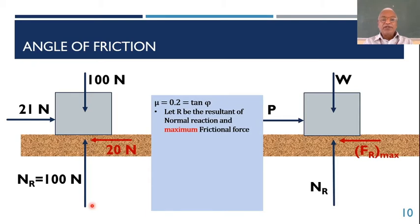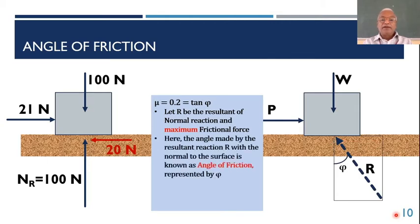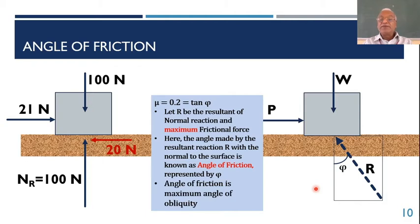Let R be the resultant of the normal reaction and the maximum frictional force FR max. The angle made by this resultant reaction R with the normal to the surface is known as the angle of friction, represented by the letter phi. Earlier, when FR was not at maximum, we called the angle the angle of obliquity. Now that angle of obliquity has reached its maximum value — that maximum angle of obliquity is referred to as phi, the angle of friction. So angle of friction is the maximum angle of obliquity.